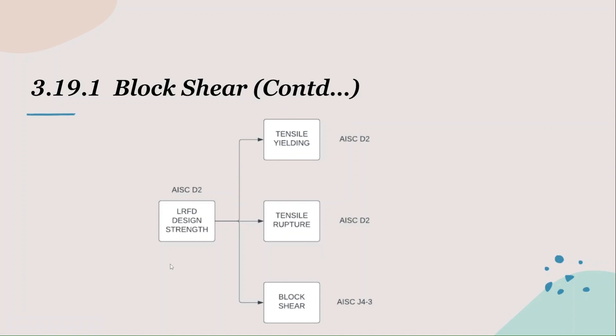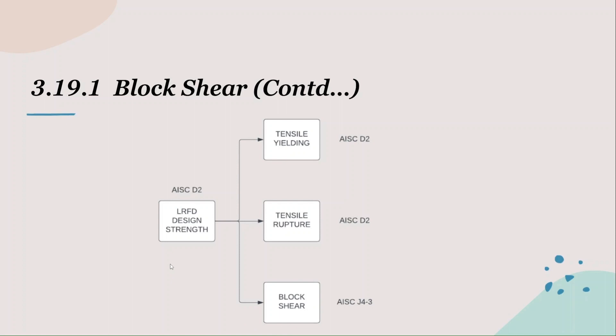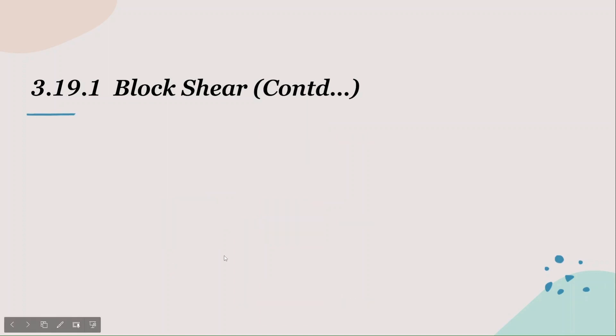There is also a third type of failure that can arise in steel members under tension, and that is block shear. We only used the yielding and rupture phenomena while solving for design tensile strength earlier, but there might be cases where the block shear strength controls and that strength is less than yielding strength or rupture strength. So we need to account for block shear while computing the design tensile strength.